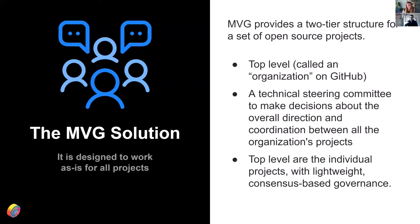Underneath the top level, you have individual projects, each with a lightweight consensus-based governance model. Consensus-based governance is how a lot of open source projects already operate. We're just trying to encapsulate and capture the way that most open source projects and organizations work today so that we don't need to rewrite it every time we create a new organization or project.